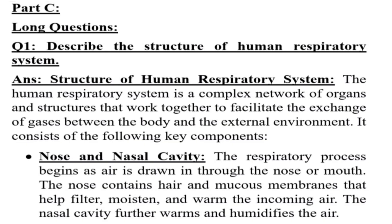Part C Long Questions. Question number 1: Describe the structure of human respiratory system. Answer: The human respiratory system is a complex network of organs and structures that work together to facilitate the exchange of gases between the body and the external environment. It consists of the following key components. Nose and nasal cavity: The respiratory process begins as air is drawn in through the nose or mouth. The nose contains hair and mucous membranes that help filter, moisten, and warm the incoming air. The nasal cavity further warms and humidifies the air.